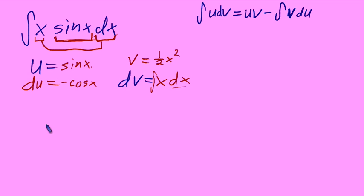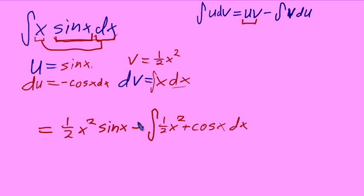Alright, uv gives us one half x squared sine of x. That's just the u times v in the formula there. Minus the integral of v du: one half x squared times negative cosine of x dx. Now notice what we have here. This will give us, after we rearrange everything, the integral of x squared cosine of x. We're no closer to solving this integral than what we were before. So that's the point you need to drive home.